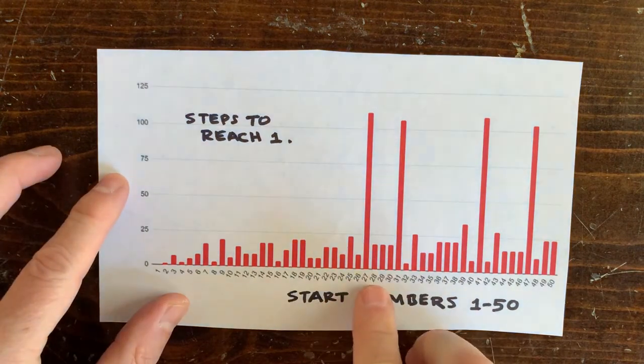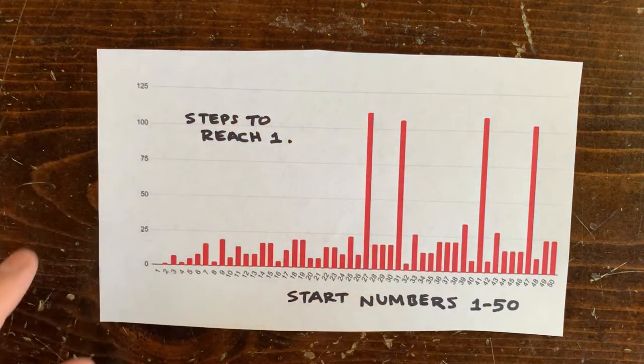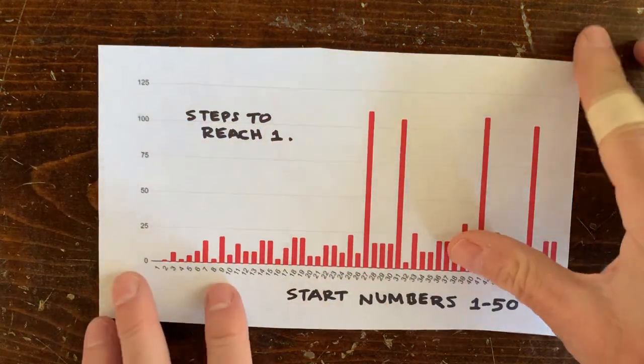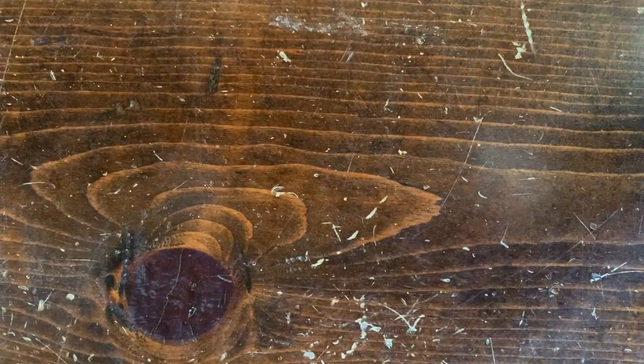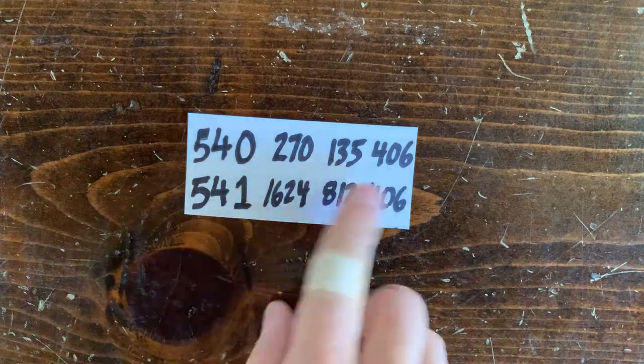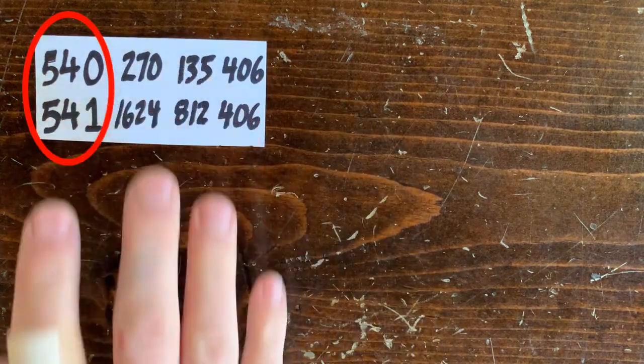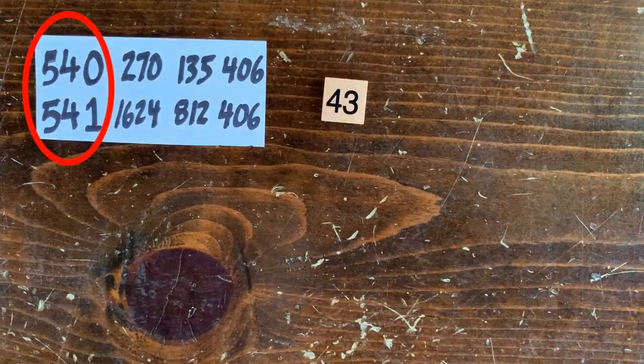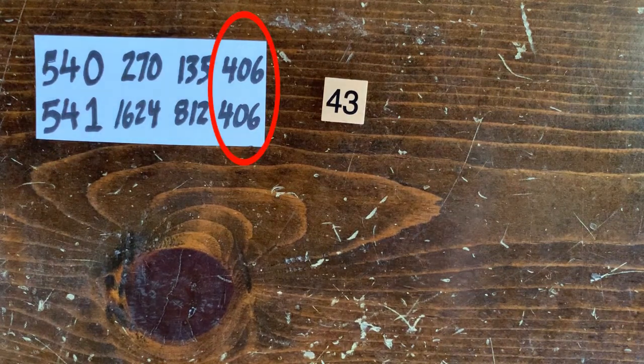Next, we looked at how many steps it takes for a number to reach 1. 26 takes just a few steps, but 27 takes much more time. And it's pretty chaotic, though we noticed that a lot of adjacent numbers take exactly the same number of steps to reach 1. For example, the sequences for 540 and 541 both take 43 steps, and they converge very quickly.